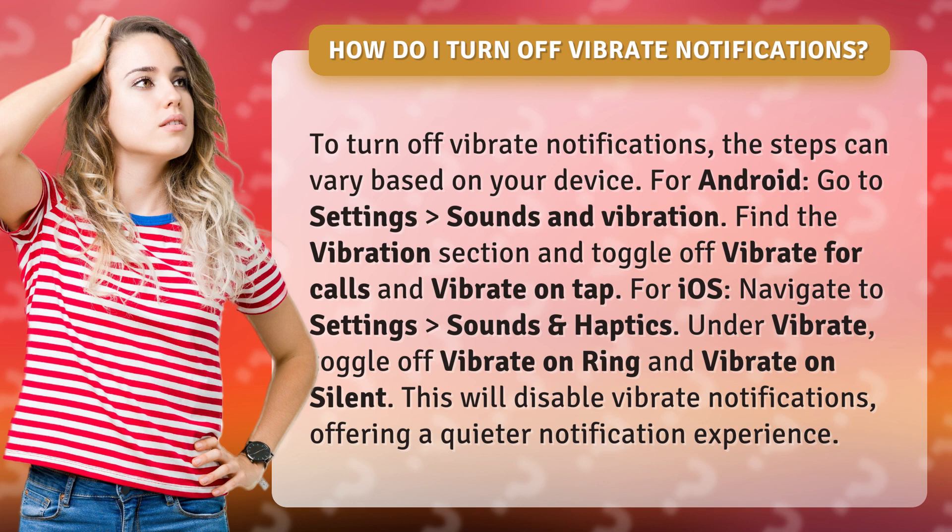For Android, go to Settings, Sounds and Vibration. Find the Vibration section and toggle off Vibrate for calls and vibrate on tap.